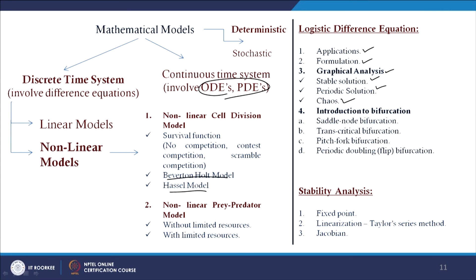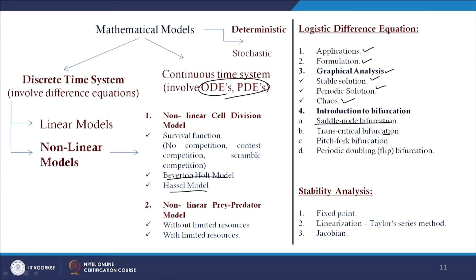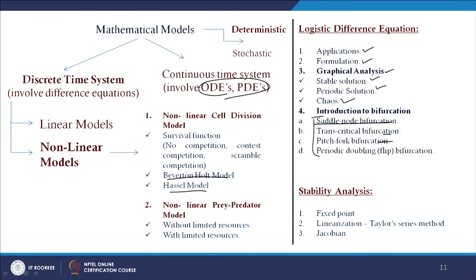Three different cases were considered for the logistic equation with R values of 2.2, 3.3, 3.33, and finally 3.9 to demonstrate chaos. Bifurcation types discussed included saddle-node bifurcation, transcritical bifurcation, pitchfork bifurcation, and period-doubling flip bifurcation. Finally, stability analysis was covered based on fixed points, linearization using Taylor's method, and the Jacobian matrix formulation. Thank you for listening to this lecture.